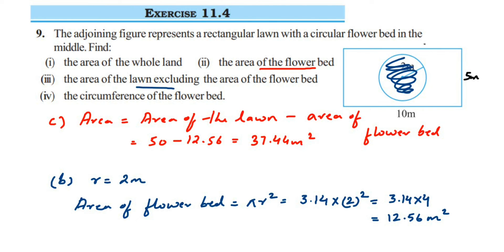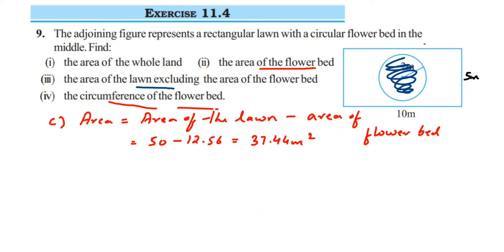For the fourth question, we need to find the circumference of the flower bed. Since we know the radius, we just use the formula and substitute the value. Circumference is denoted by capital C, so C equals 2πr. The radius given in the figure is 2 meters.